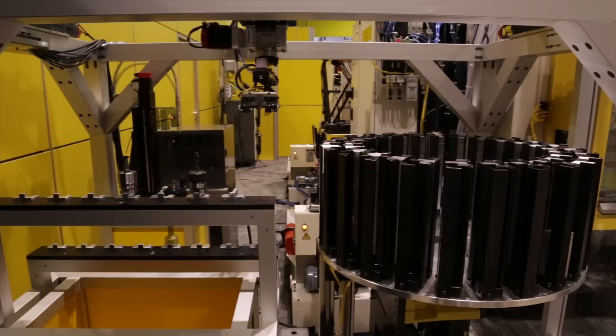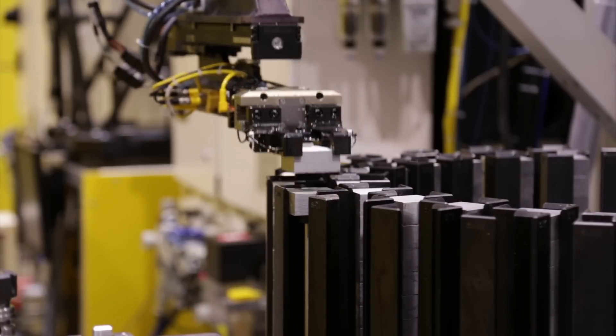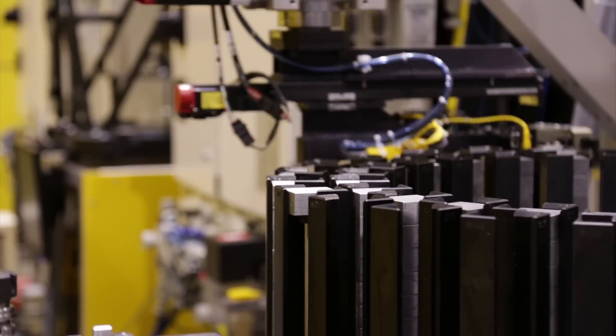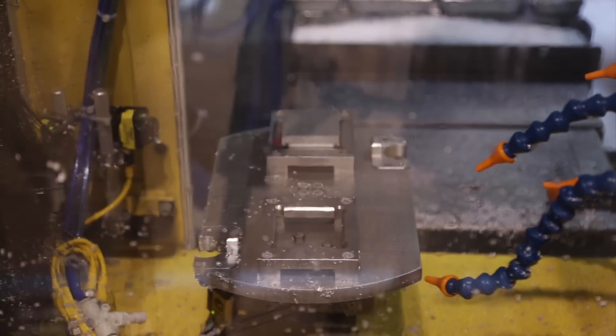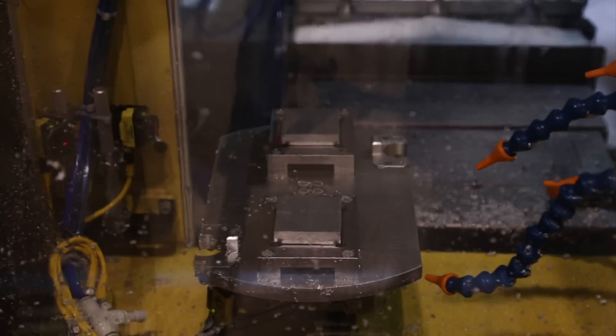Next, the gantry system picks one of hundreds of raw parts from a rotary parts feeder. The gantry system places the part into one side of a 180 degree rotary table. This table holds two raw parts until the machining process is finished.